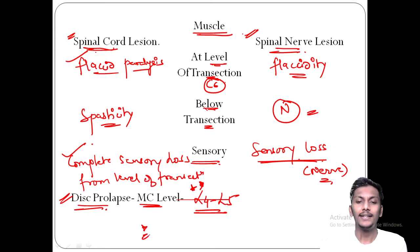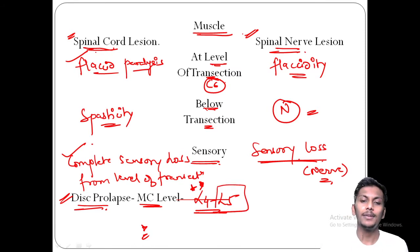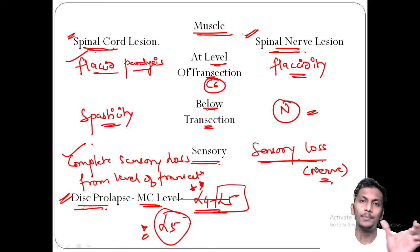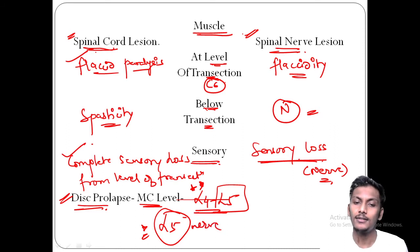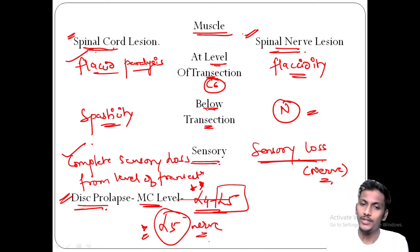Which nerve is affected in L4-L5 disc prolapse? Always the second number is affected — so L5 nerve is affected. Similarly, in L3-L4 disc prolapse, the L4 nerve is affected.